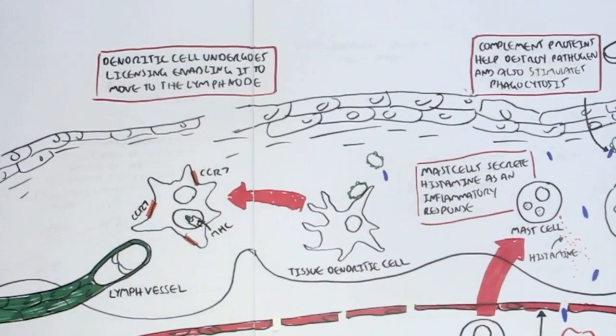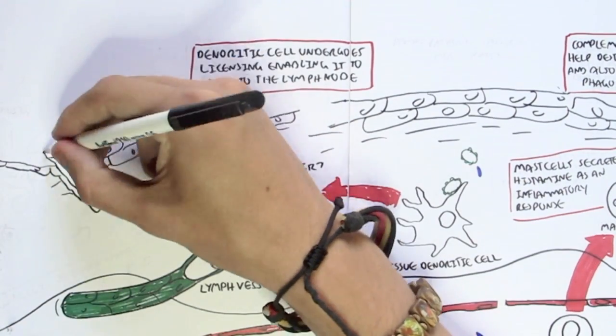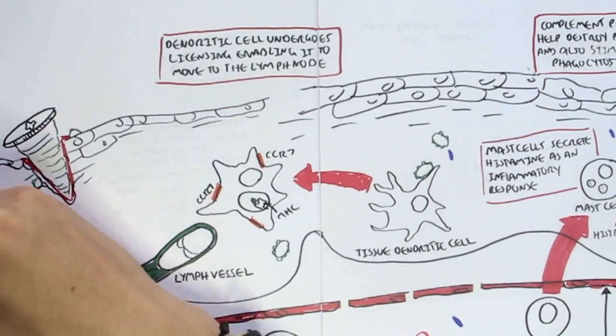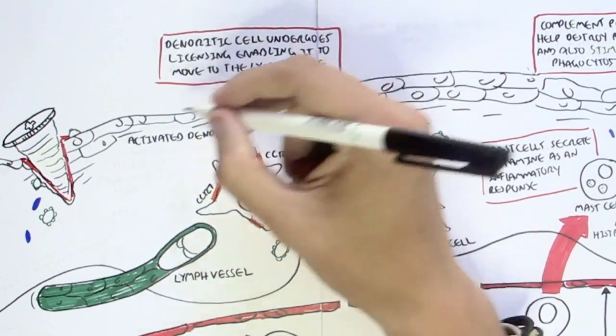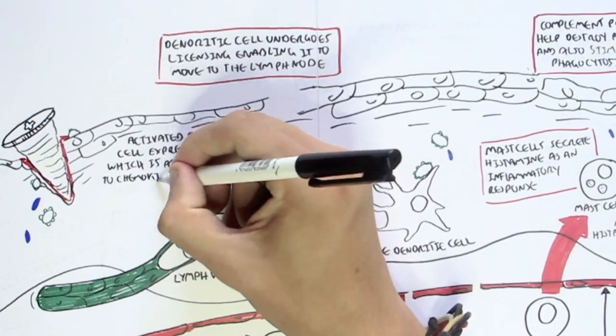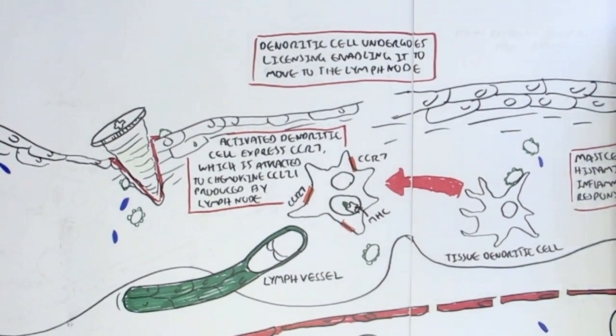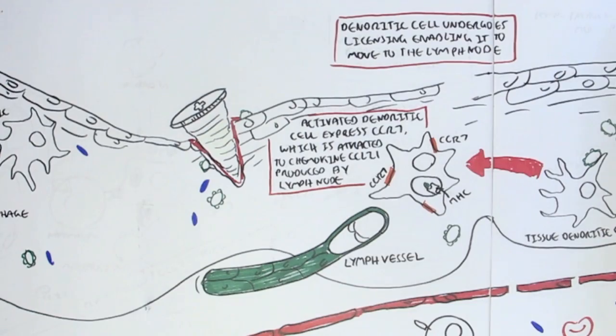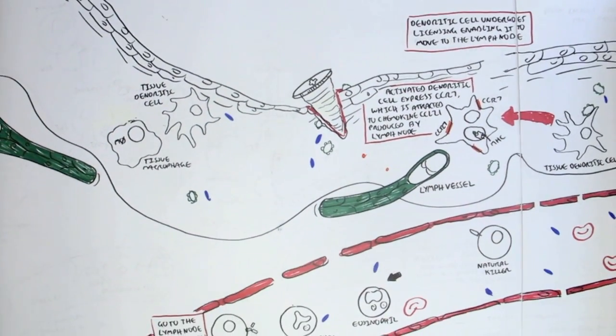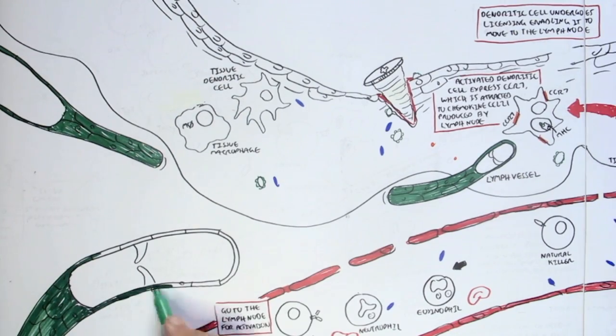And CCR7 is essentially like a magnet which has an attraction to chemical signals coming from the lymph node, chemokines. So just to draw again here, we are in the site of inflammation and infection here, where the pathogen has infiltrated the body. And so this activated dendritic cell, as I mentioned earlier, expresses CCR7, which is attracted to a chemokine, CCL21, produced by the lymph nodes, allowing the dendritic cell to move into, to travel through the lymph vessel and travel to the lymph node.